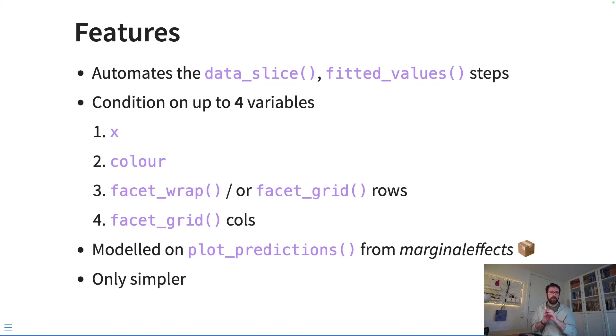So we will get a string of small multiple plots. And then if you use four variables, instead of using facet_wrap, the third variable will be mapped to the rows and the fourth variable will be mapped to the columns of a facet_grid.